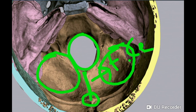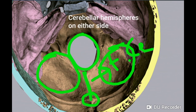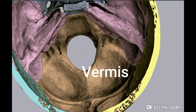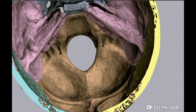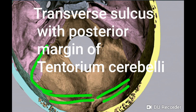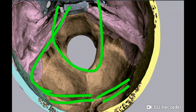The internal occipital crest diverges below into a triangular depression called the vermian fossa, which lodges the inferior vermis of the cerebellum. A transverse sulcus extends laterally on either side from the internal occipital protuberance, lodging the transverse sinus and giving attachment to the posterior margins of the tentorium cerebelli.